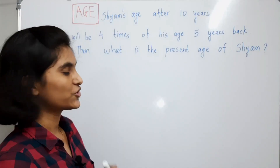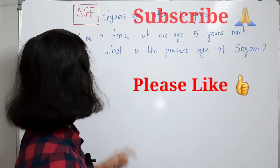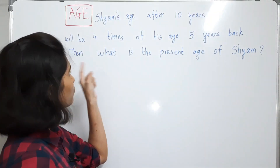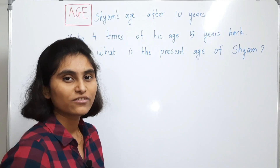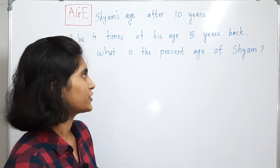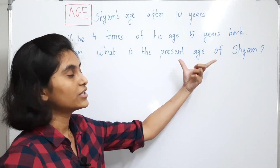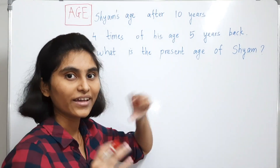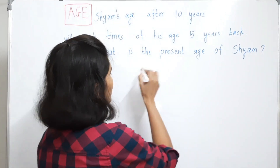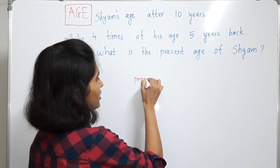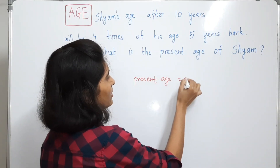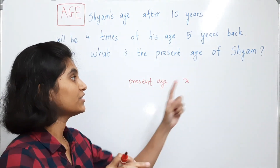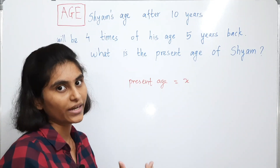Here we have a question: Shyam's age after 10 years will be 4 times of his age 5 years back. What is the present age of Shyam? In order to solve this question, we have asked about the present age of Shyam, so you just take this as x which is unknown. Let me take the present age of Shyam as x. Our next job is to find some equation in the variable x and we will solve for x.